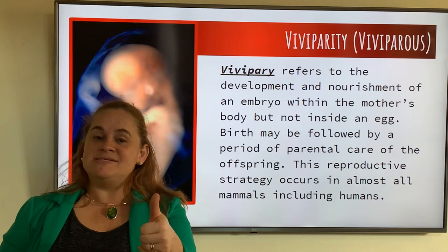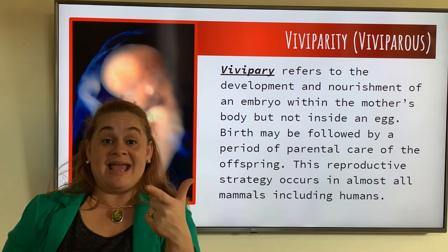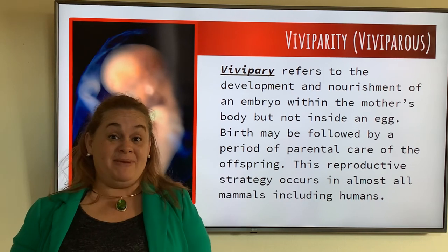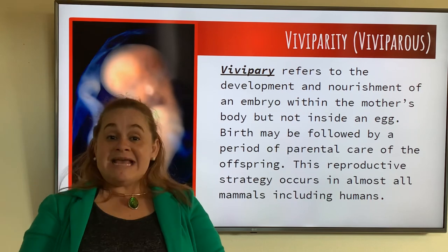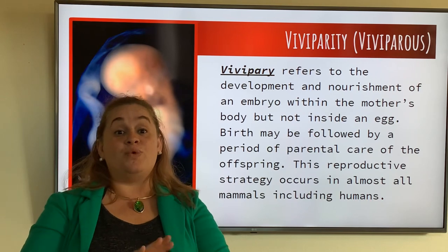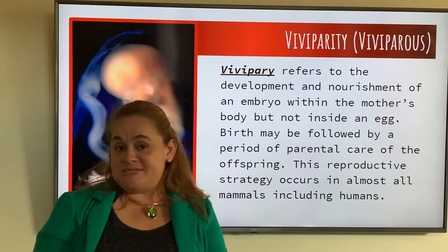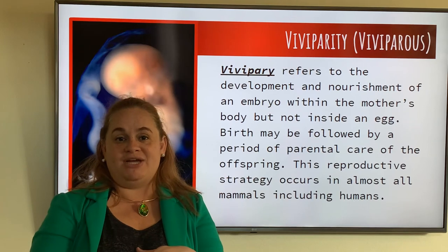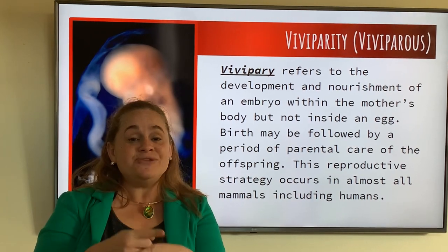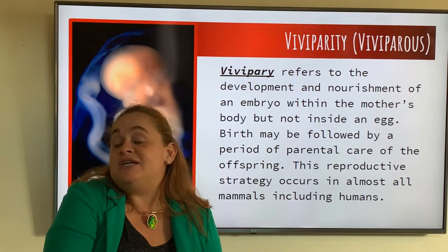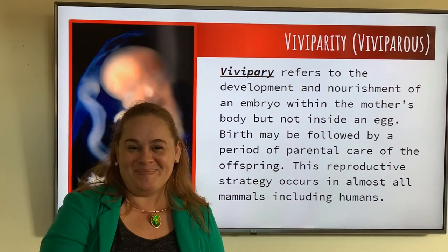Quick recap: oviparous — they lay eggs. Ovoviviparous — they lay eggs but keep them inside the body. Viviparous — the baby is inside the body with no egg to protect it, because the mom itself is doing the protection. That's your quick mini lesson for the three strategies in vertebrates. See you next time.